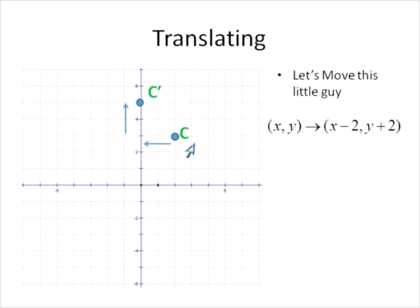So C is our original point or our pre-image and then C with the accent is our image. So we've translated this point. And this is the way that we would write it. This is the notation that you'll use. Say (x, y) is translated to (x - 2, y + 2). Let's do another one.